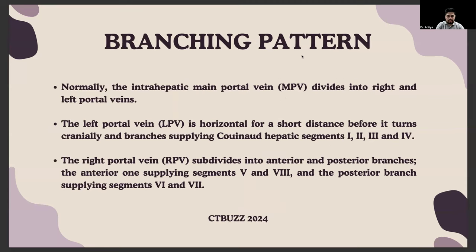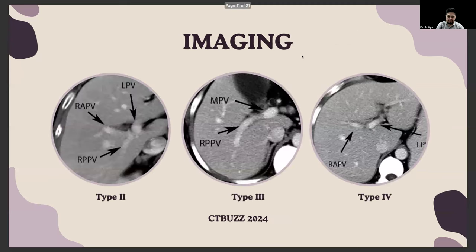Regarding the normal branching pattern: the intrahepatic portal vein — the main portal vein — divides into right and left portal branches. The left portal vein is horizontal for a short distance before it turns cranially, supplying Couinaud segments 1, 2, 3, and 4. The right portal vein subdivides into anterior and posterior branches; the anterior one supplies segments 5 and 8, and the posterior one supplies segments 6 and 7. This imaging illustrates the same in pictorial format.